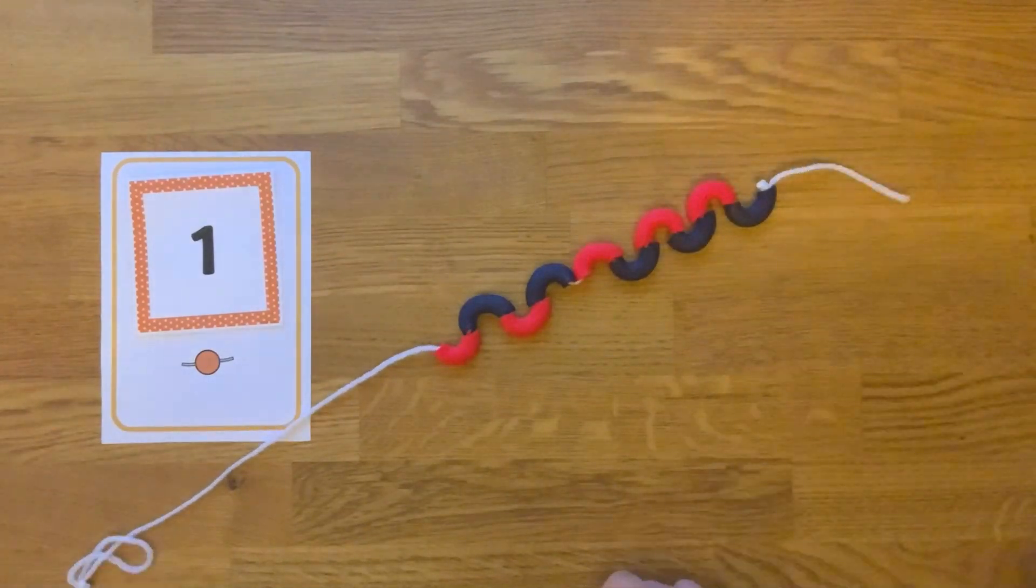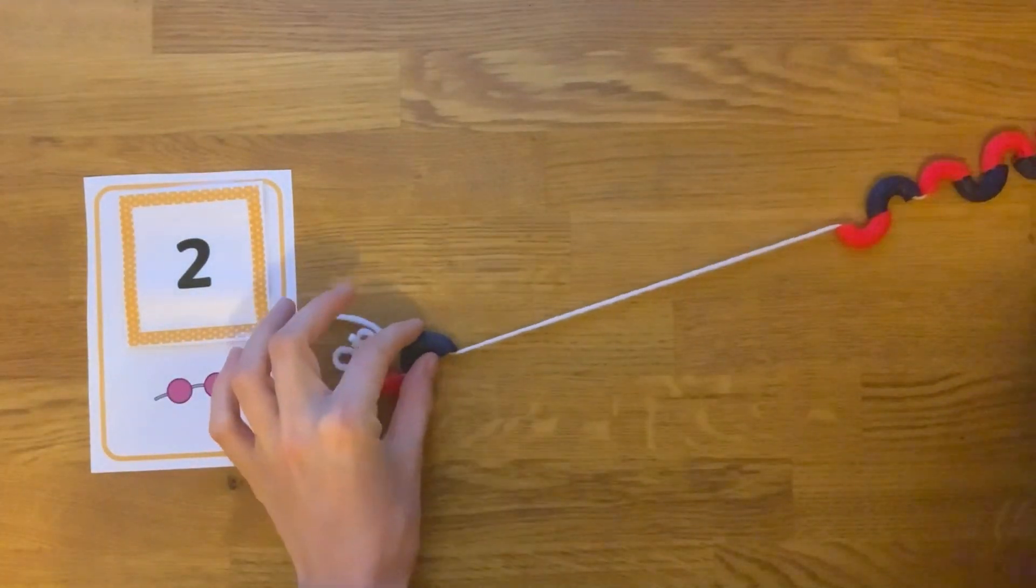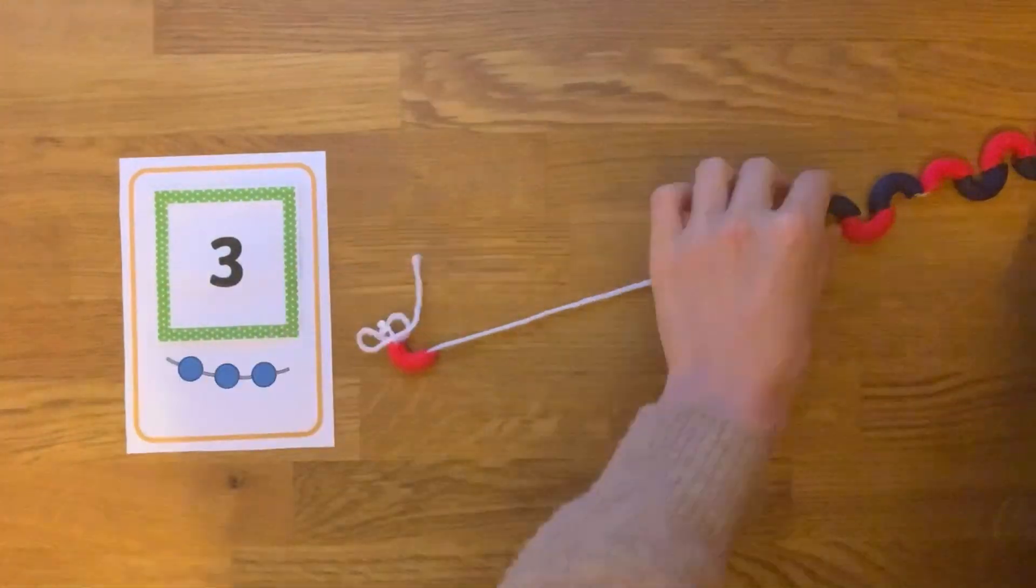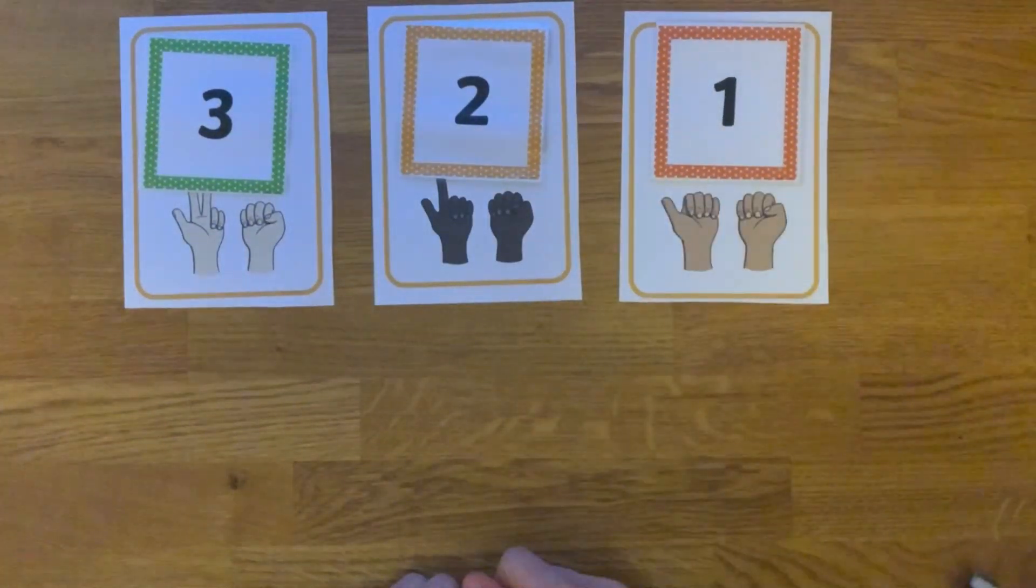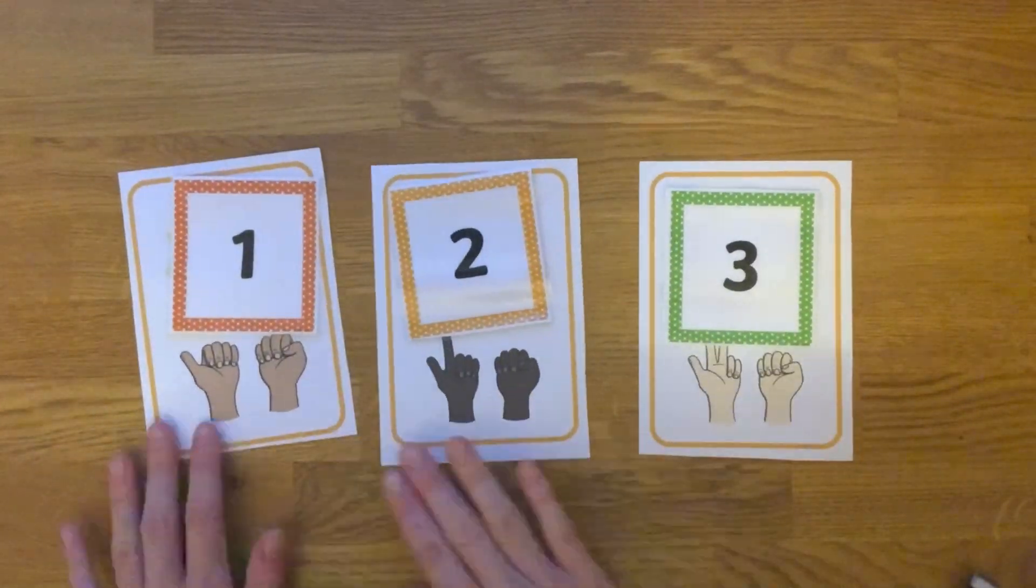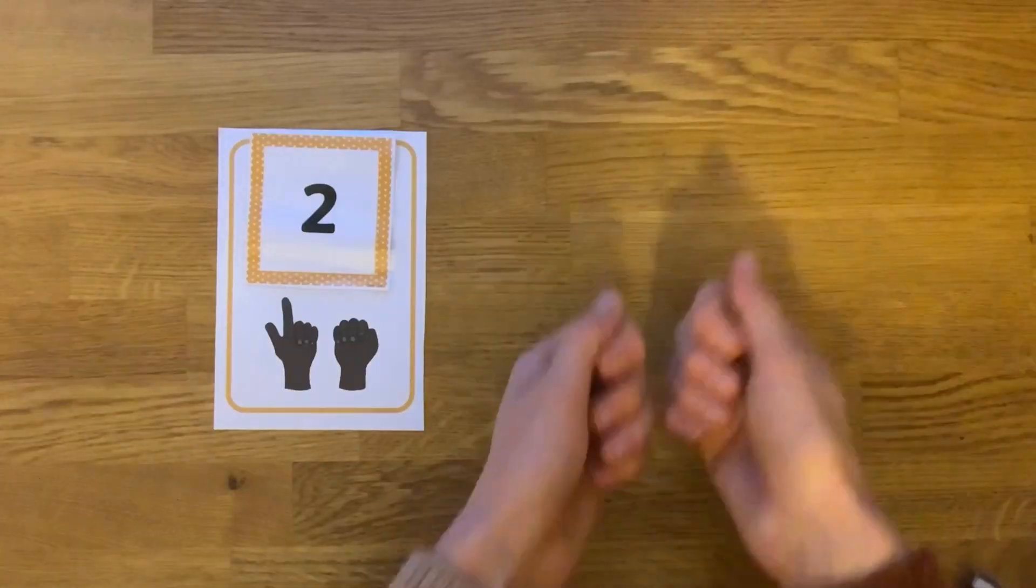Can children use concrete objects to represent the numbers shown in the pictures? The resource shows lots of different representations for numbers 1 to 3. Can children show you each number using their fingers?